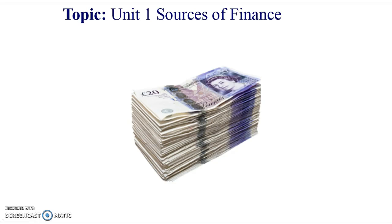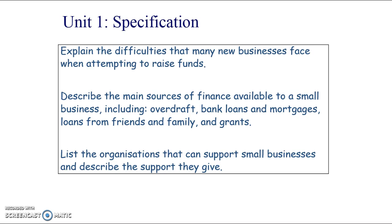Sources of Finance is a really straightforward section of the course and it's also very commonly asked as an area for a nine mark question in the exam, so it's really important that you know this area well. It comes into unit one and unit two as well, so you need to be able to explain the difficulties that many new businesses face when attempting to raise funds or access finance. We need to know the main sources of finance available to small businesses and be able to explain the advantages and disadvantages of each source.